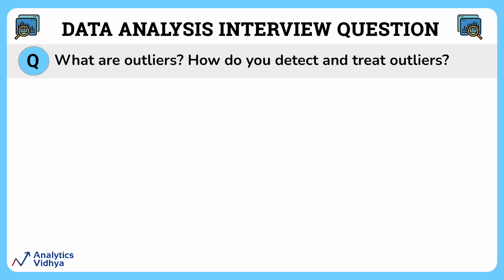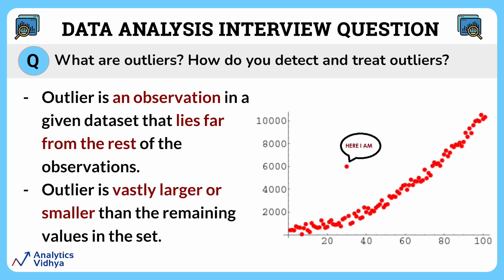What are outliers and how do you detect and treat outliers? Let's understand what an outlier is first. An outlier is an observation in a given dataset that lies far from the rest of the observations. That means an outlier is vastly larger or smaller than the remaining values in the set. In simple words, outliers are extreme values that might not match with the rest of the data points.